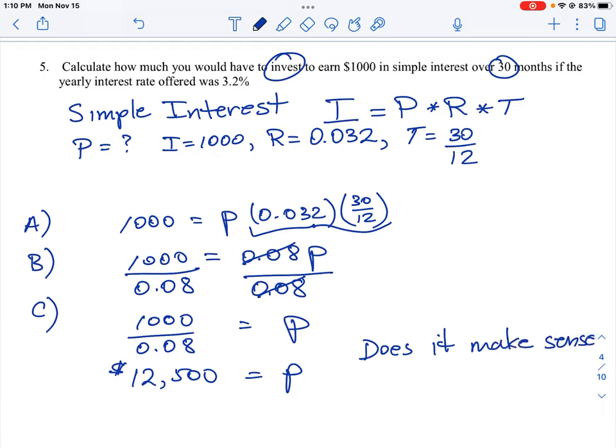So we are trying to earn $1,000 in interest from a bank that's offering an interest rate of 3.2%. So does it make sense that the principal would have to be much, much larger in order to earn $1,000?